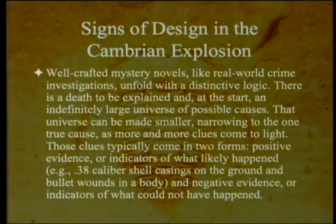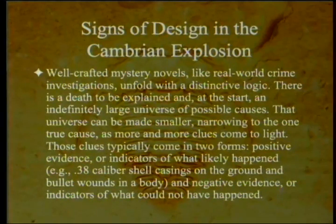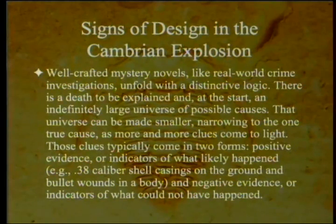Well-crafted mystery novels, like real-world crime investigations, unfold with a distinctive logic. There is a death to be explained, and at the start, an infinitely large universe of possible causes. That universe can be made smaller, narrowing to the one true cause, as more and more clues come to light. These clues typically come in two forms: positive evidence, or indicators of what likely happened — for example, 38 caliber shells, casings on the ground, and bullet wounds in a body — or negative evidence, indicators of what could not have happened.